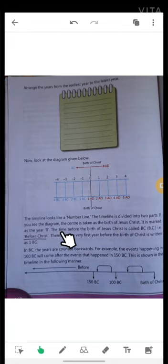The time before the birth of Jesus Christ is called BC, that is Before Christ. Therefore, the very first year before the birth of Christ is written as 1 BC. In BC, the years are counted backwards.